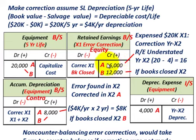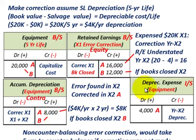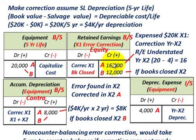To summarize the correction entries: capitalize the equipment at $20,000; recognize accumulated depreciation for both years X1 and X2 totaling $8,000; record depreciation expense on the income statement for the current year X2 of $4,000; and credit or increase retained earnings by $16,000, since it was understated by that amount.